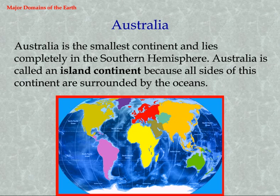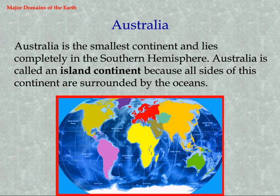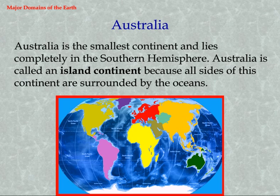Australia is the smallest continent and lies completely in the Southern Hemisphere. Australia is called an island continent because all sides of this continent are surrounded by the oceans.